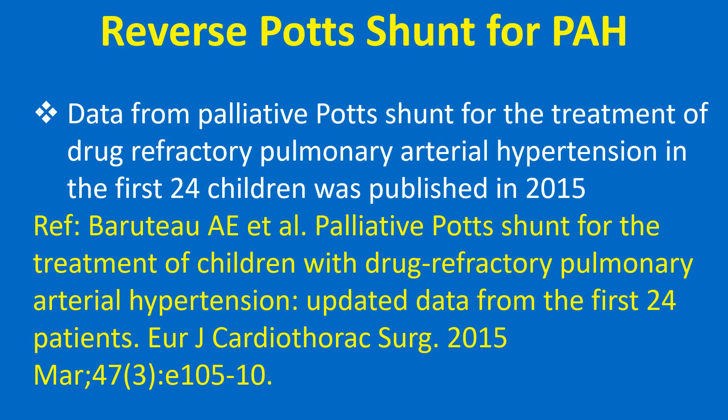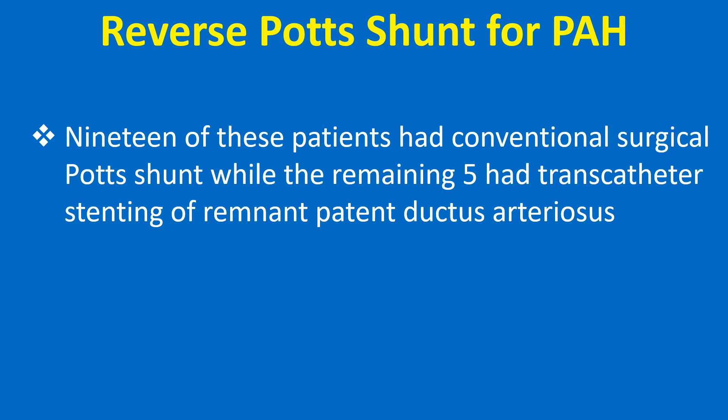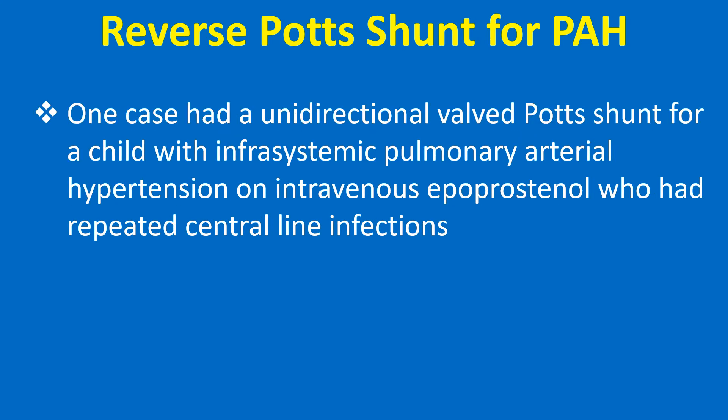Data from palliative Potts shunt for the treatment of drug-refractory pulmonary arterial hypertension in the first 24 children was published in 2015. Nineteen of these patients had conventional surgical Potts shunt, while the remaining 5 had transcatheter stenting of a remnant patent ductus arteriosus. One case had a unidirectional valved Potts shunt for a child with infrasystemic pulmonary arterial hypertension on intravenous epoprostenol who had repeated central line infections.